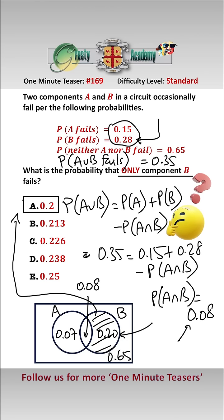Anybody who did 0.85 times 0.28 to get answer D, that is only when A and B are independent, which they are not in this case.